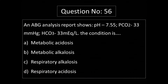Question number 56: An ABG analysis report shows pH of 7.55, partial pressure of carbon dioxide 33 mmHg, bicarbonate 33 milliequivalents per litre. This condition is — Option A: metabolic acidosis. Option B: metabolic alkalosis. Option C: respiratory alkalosis. Option D: respiratory acidosis.